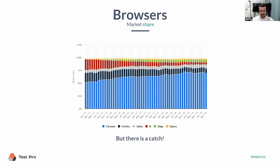Chrome is the most popular browser without any doubt. Firefox is losing its position. Safari is growing a little bit, but not too much — it's definitely going away. Edge is becoming a little bit more popular, and Opera has around 2% or something. So that's how it looks in general.